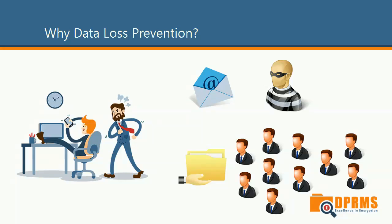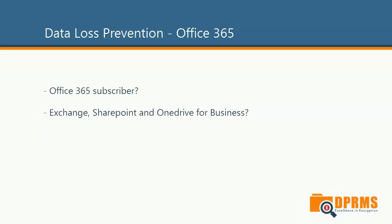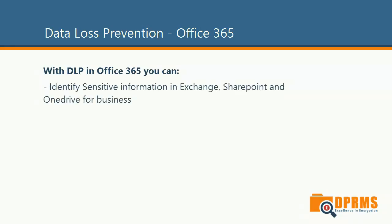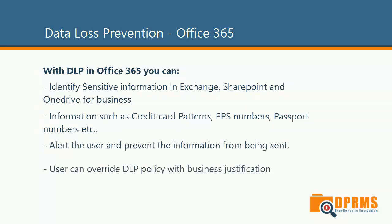To get better control of the information that circulates within or is being shared outside the organization, data loss prevention is something that you should take a look at. If you are an Office 365 customer using Exchange, SharePoint, or OneDrive in your daily work and you have regulations to comply with, then you should be looking at enabling DLP functions included with Office 365. DLP in Office 365 can identify sensitive information such as credit card patterns, PPS numbers, and passport numbers across all these locations. If you are sending an email and the recipient looks a little bit suspicious, DLP would give you a warning, and the user can still send the email with a business justification that can be reviewed later. Let me show you how this works.